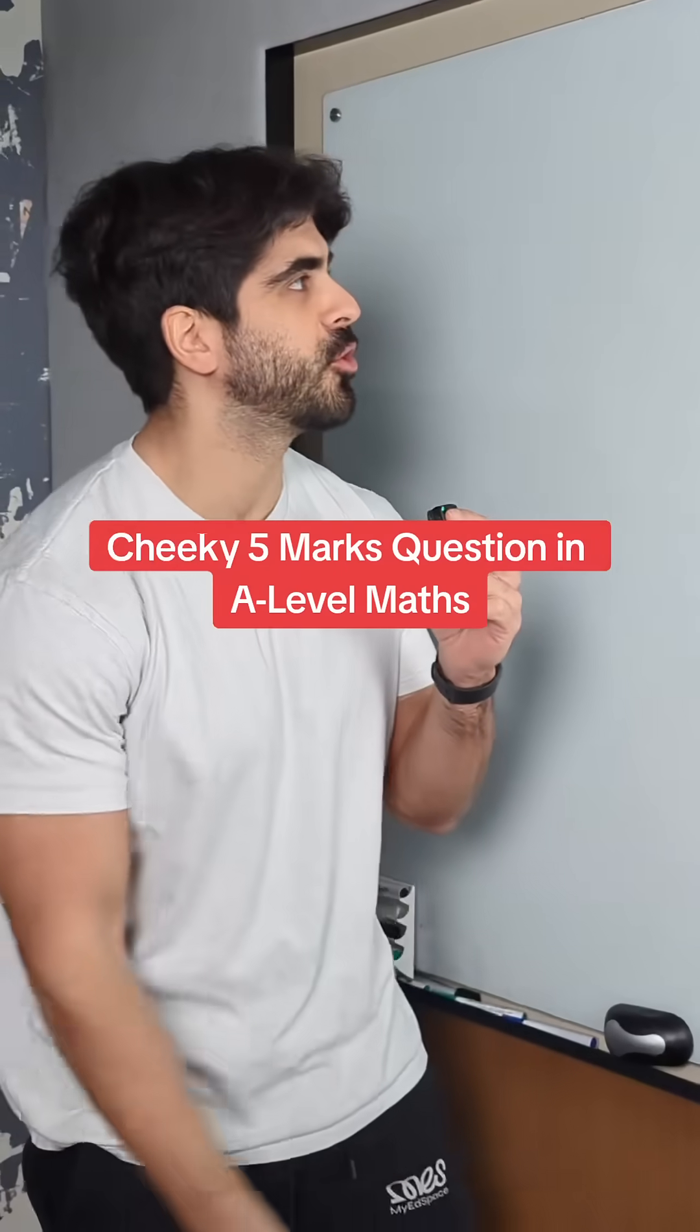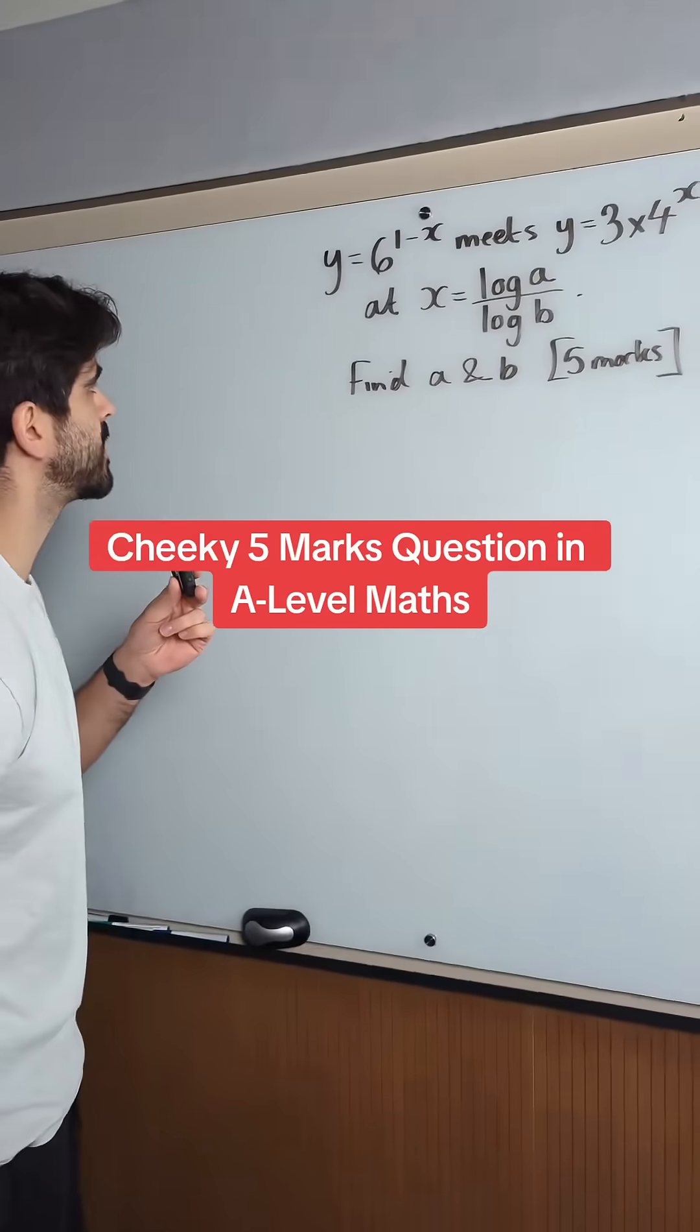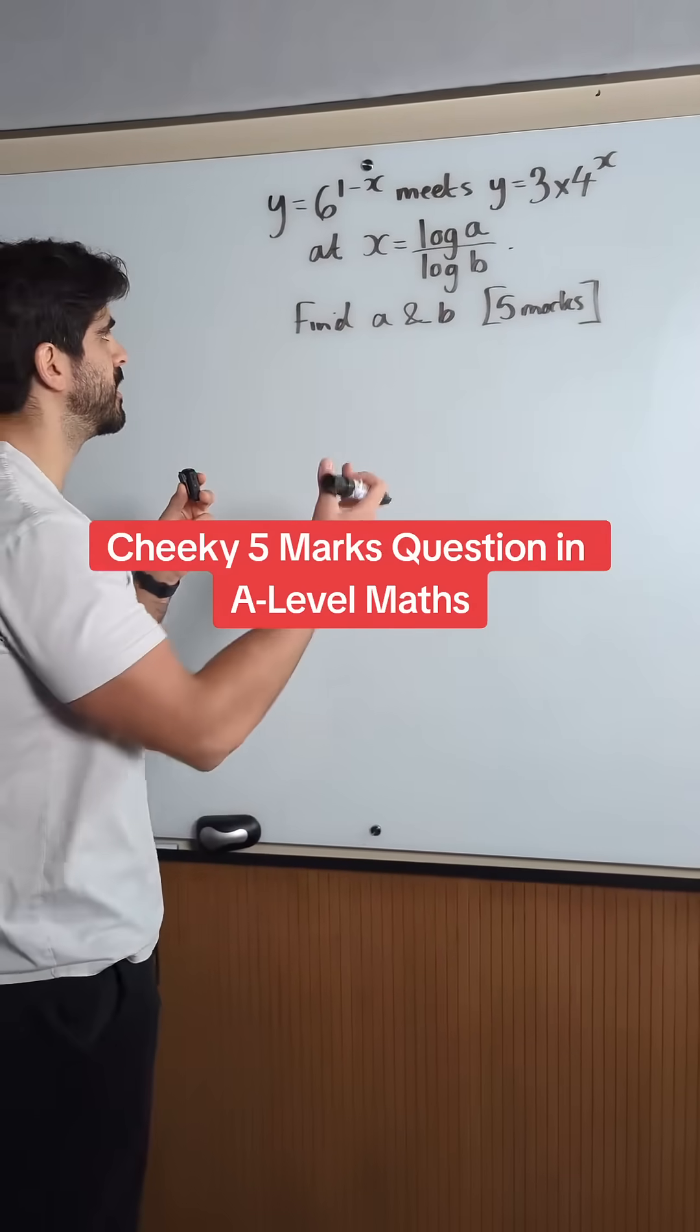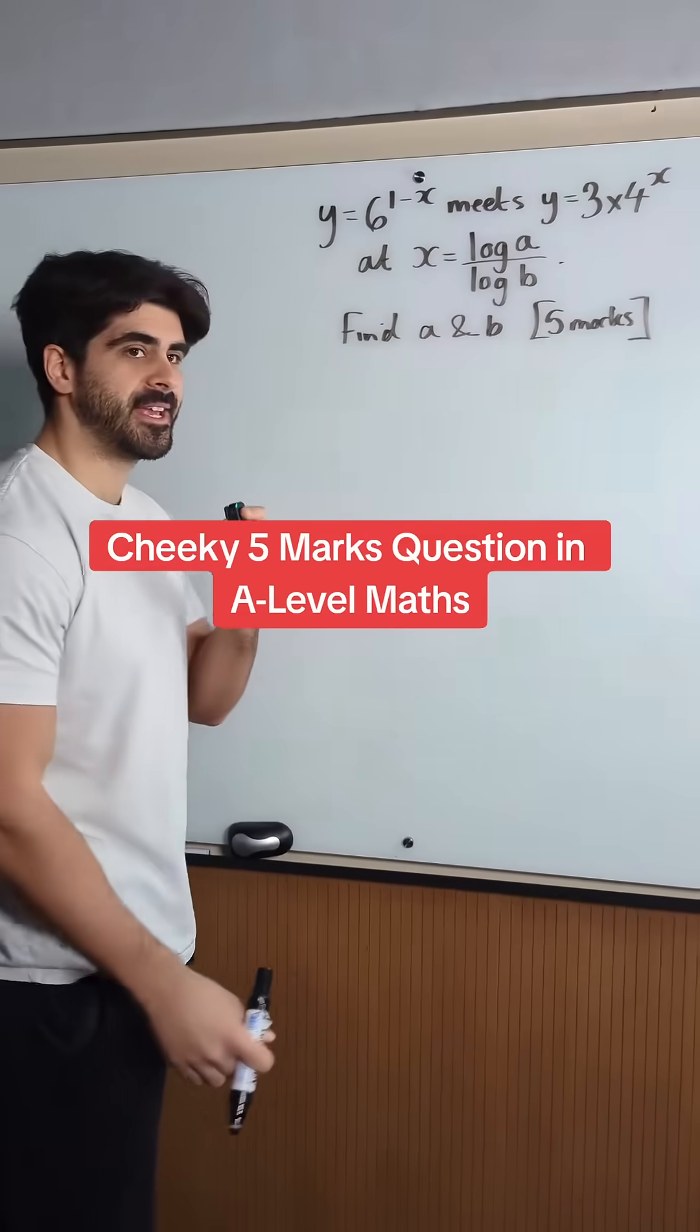Cheeky five marker. Let's do some logs. So y equals 6 to the power of 1 minus x meets y equals 3 times 4 to the power of x. x is log a over log b, find a and b.